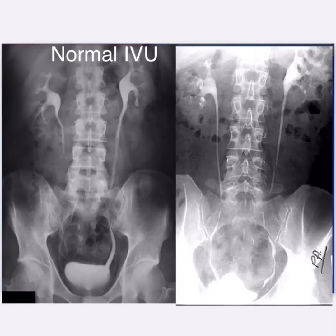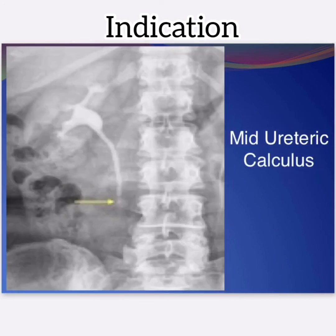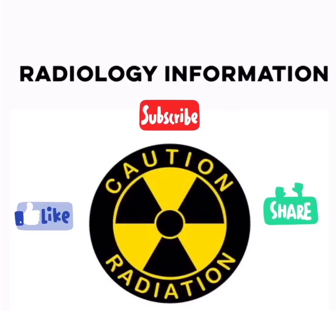Normal patient IVU images are shown, with both images from different patients for comparison. Findings demonstrated include a left pelvic calculus with ureteric dilation, and mild ureteric calculus.